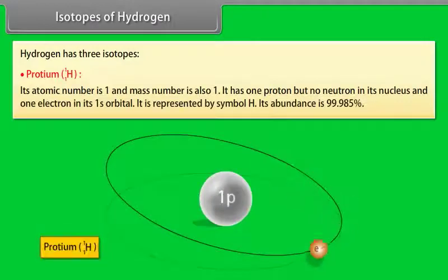Isotopes of Hydrogen. Hydrogen has three isotopes. Proteum: Its atomic number is 1 and mass number is also 1. It has one proton but no neutron in its nucleus and one electron in its 1s orbital. It is represented by symbol H. Its abundance is 99.985%.